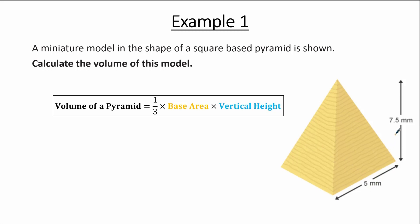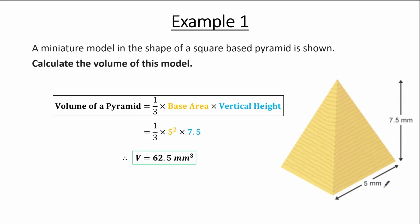The vertical height is 7.5. Substituting these values, the volume equals one-third multiplied by 5 squared multiplied by 7.5. Finishing the calculation, the volume of this pyramid equals 62.5 mm cubed — mm cubed because the units given in the question are millimeters.